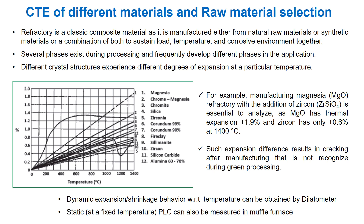Why should we emphasize CTE for refractory when different oxides and secondary phases are present? In actuality, refractory is a classic composite material, manufactured from natural or synthetic raw materials or both, to sustain load, temperature, and corrosive environment together. Several phases exist during processing and frequently develop different phases in application. Different crystal structures experience different degrees of expansion at a particular temperature.